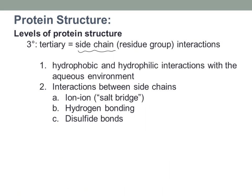The tertiary structure is all about the side chains — the R groups. We're not talking about the backbone or peptide bonds; we're talking about side chain interactions. So given your amino acid structure with its amino group, carboxyl group, H, and R group, the question is: what is that R group doing? Will it hydrogen bond with other things? We'll look at hydrophobic and hydrophilic interactions as well as ion-ion attractive forces, hydrogen bonding, and covalent disulfide bonds.